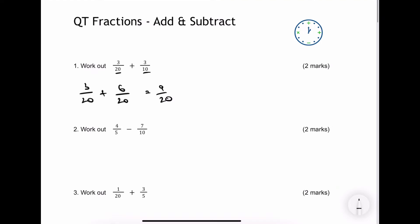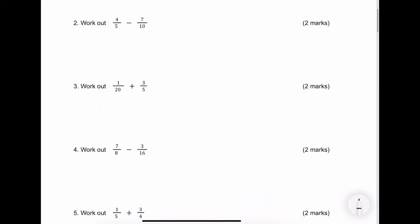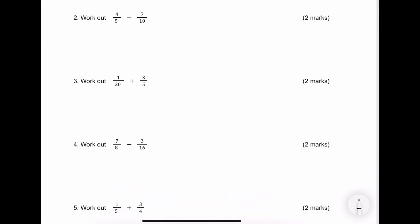Let's have a look at the next one, which is 4 fifths minus 7 over 10. We're going to use exactly the same strategy — we've got to make sure that the denominator is the same in both cases. We're okay with the second one, which is 7 over 10. With the first one I've multiplied it by 2, so it becomes 8 over 10 minus 7 over 10, which is 1 over 10.